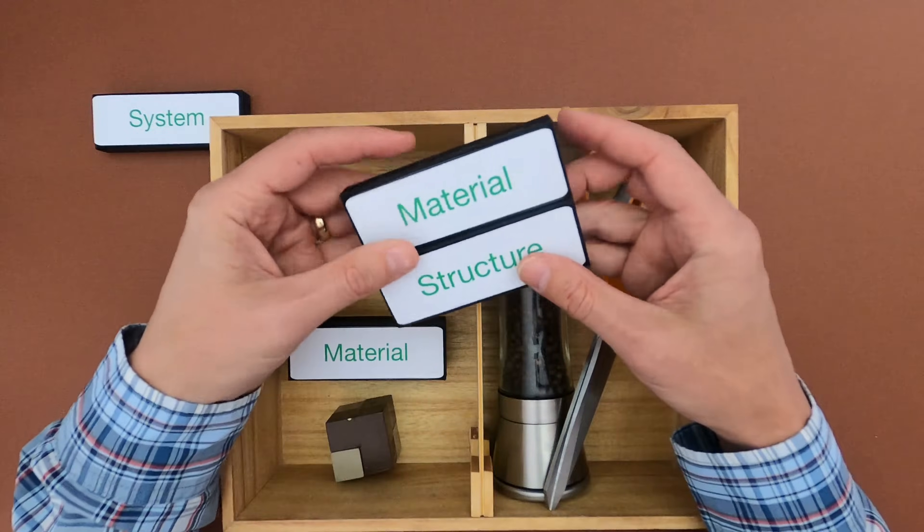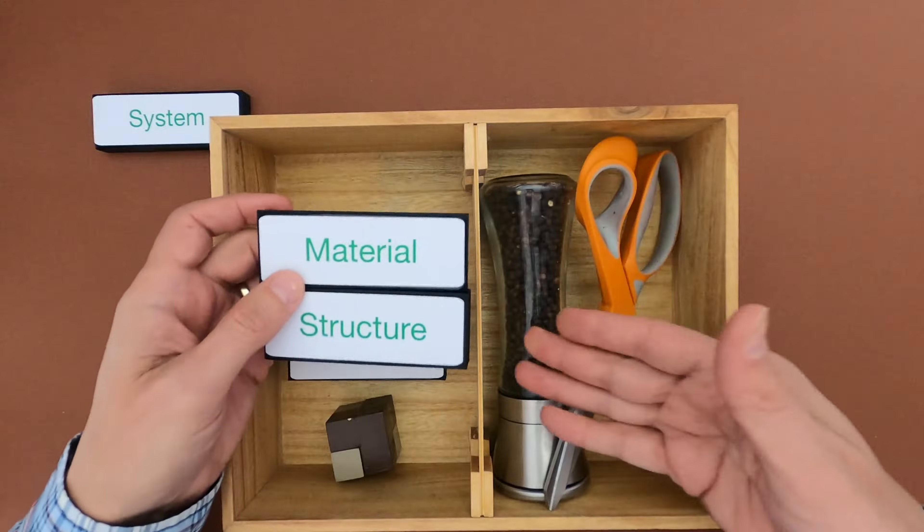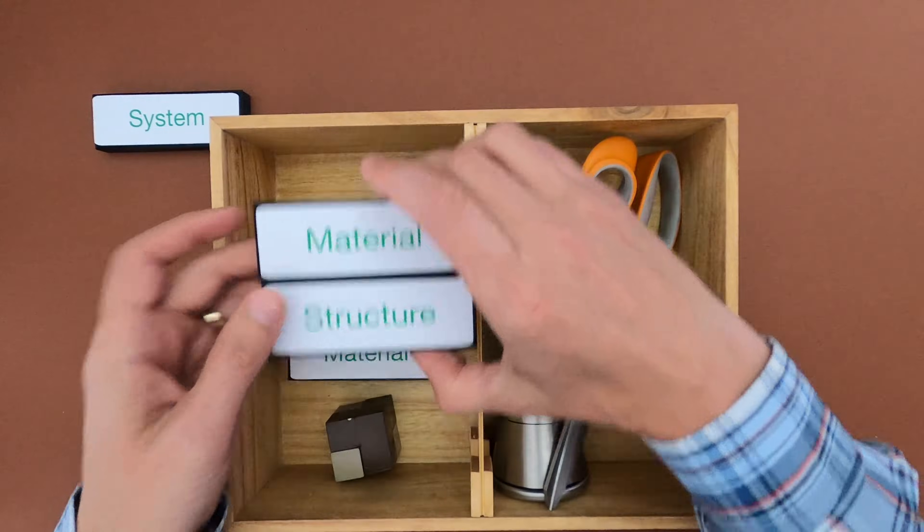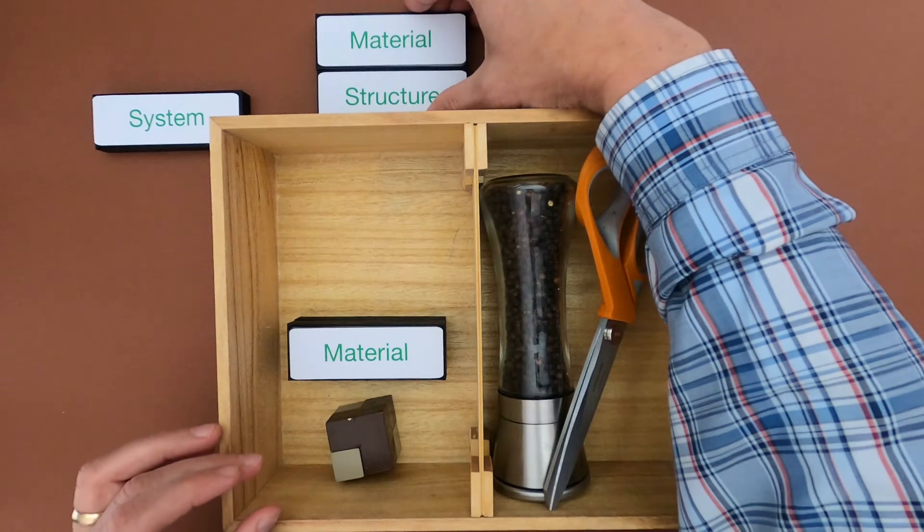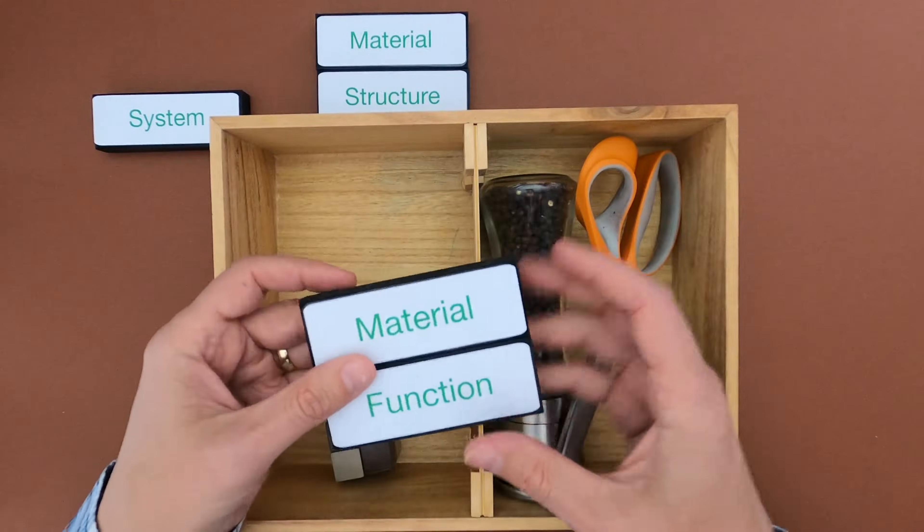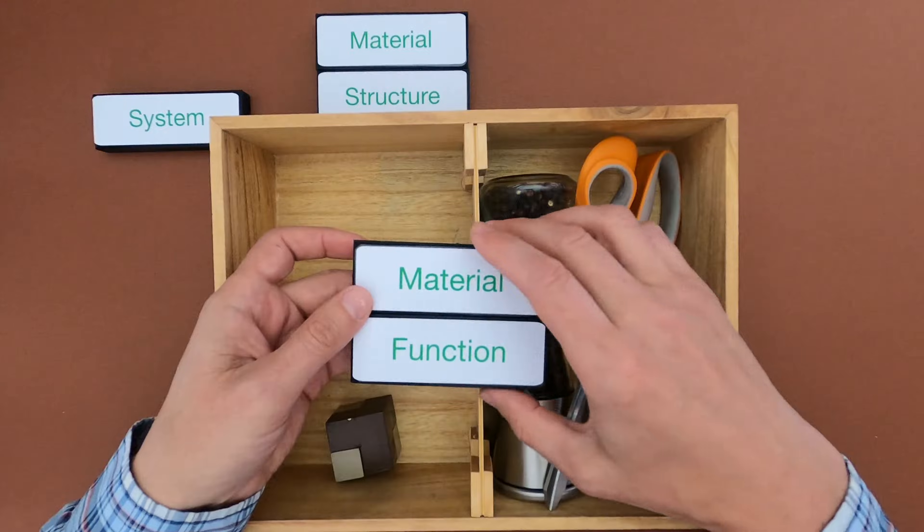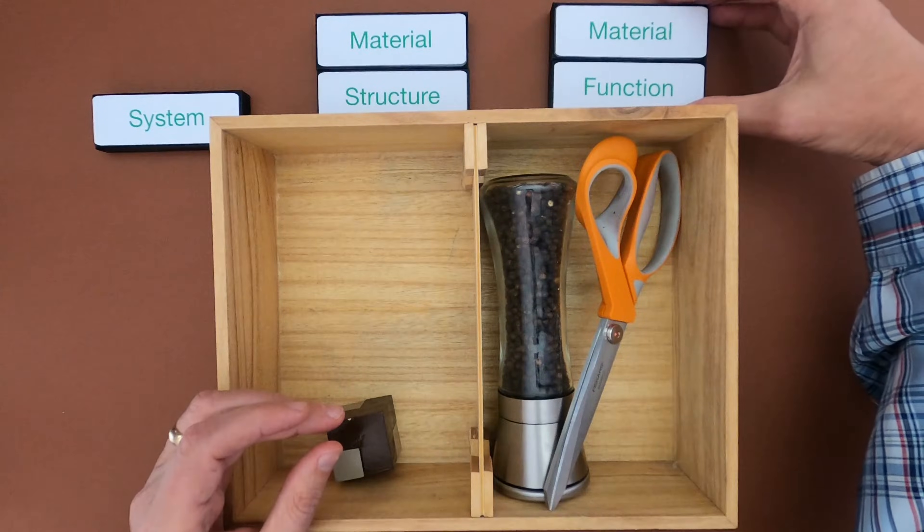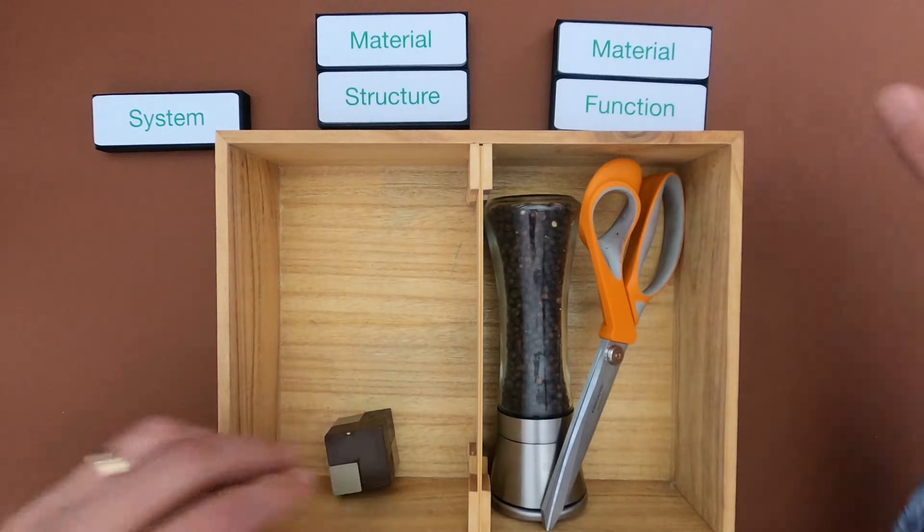There is the material structure. In other words, what material are these different structures made up of? And then there's going to be material function. So why did they choose those specific material and what function did they play in the overall design of the product?